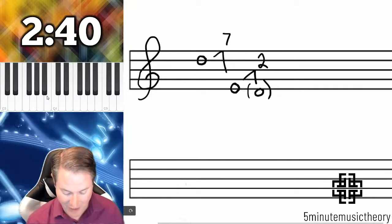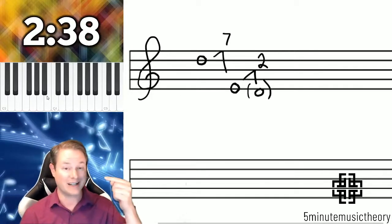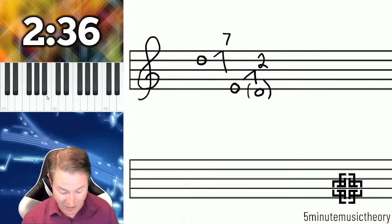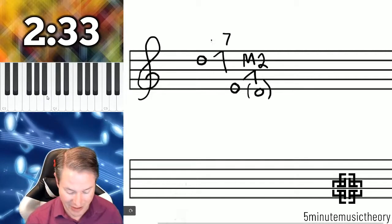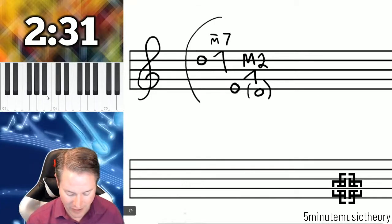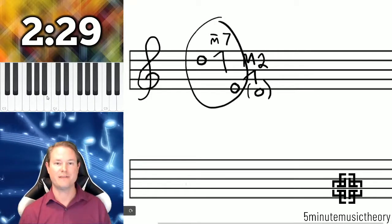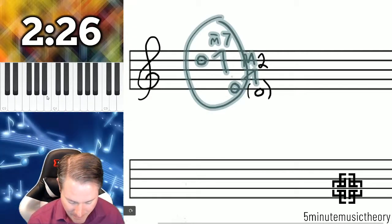Now I just need to figure out the interval from an E down to a D which is much easier. It's a major second. The complement of a major second is a minor seventh. Therefore this interval is a minor seventh. Boom. Easy as that.